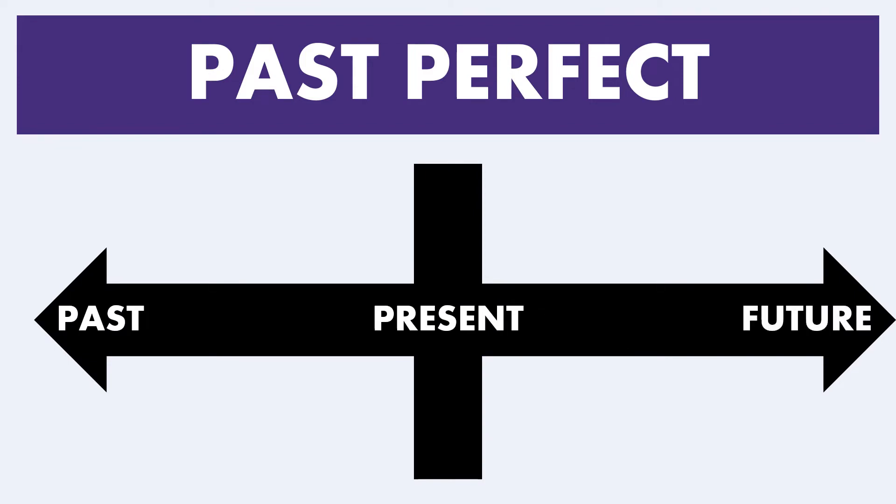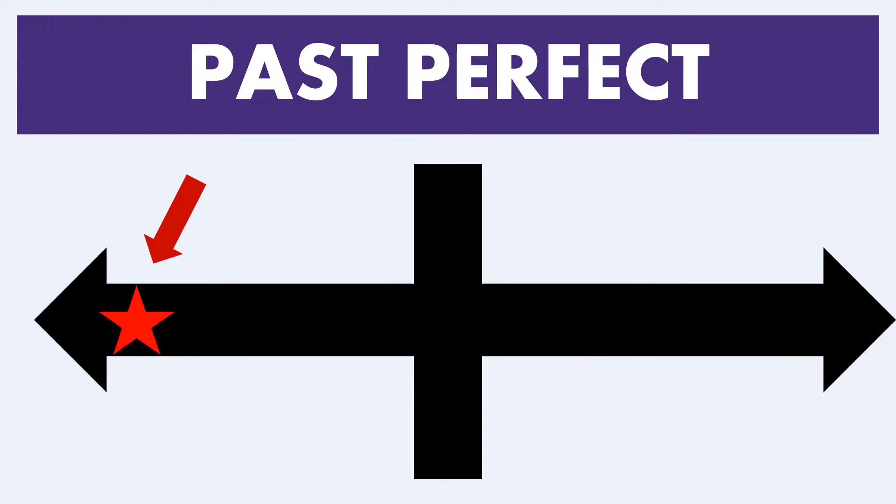For past perfect, we have our past event that we're referring to, and it occurred before another event that was also in the past. Keep in mind, the secondary event is critical for the past perfect. If you only have a single event, you'll use the simple past. But if you have a past event that occurred before another past event, then you will use the past perfect.